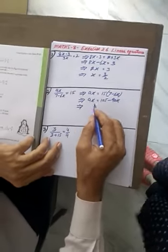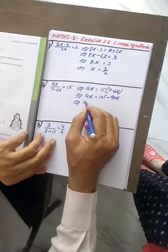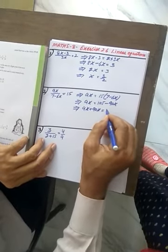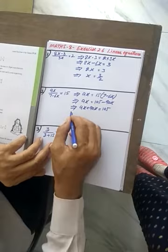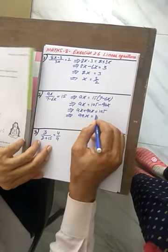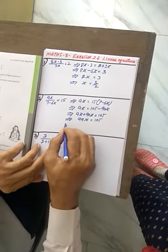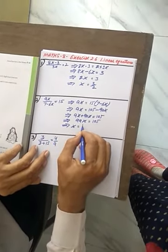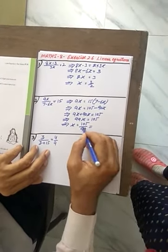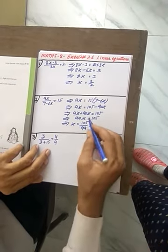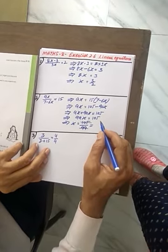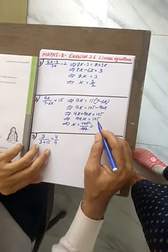The variables taken on the left side, 9x plus 90x is equal to 105. That gives us 99x is equal to 105 and x is equal to 105 upon 99. Find out the common factor, the number 3.